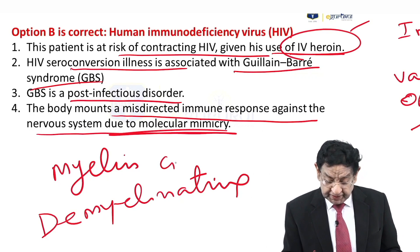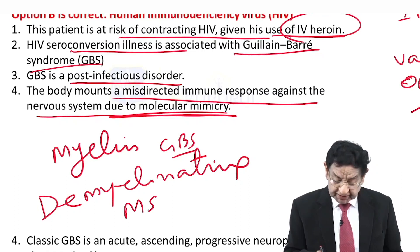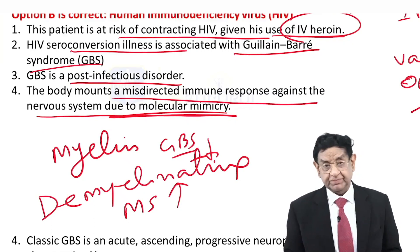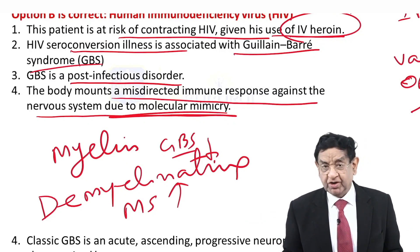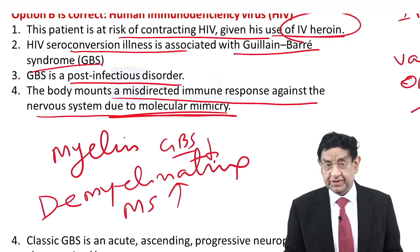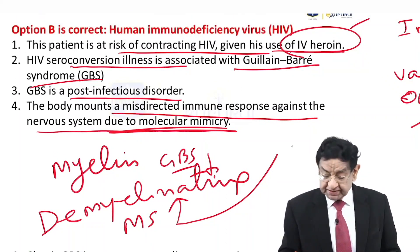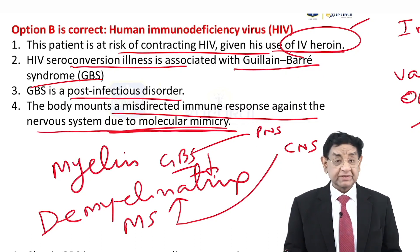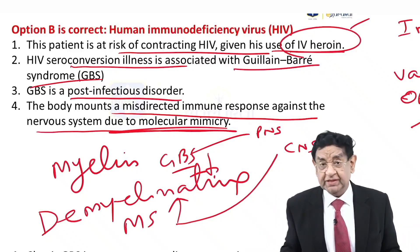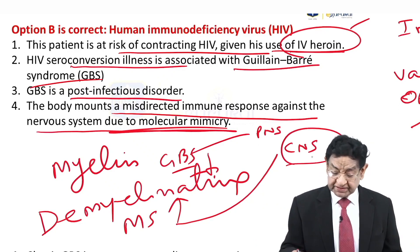GBS is a demyelinating disorder. We also know that multiple sclerosis is again a demyelinating disorder. The question is: what is the site of involvement of these two diseases? As far as MS is concerned, it is a disease of the central nervous system. As far as GBS is concerned, it is a disease of the peripheral nervous system. They both have the same pathology — a demyelinating disorder — but the site is different: MS is a CNS disease, GBS is a PNS disease.